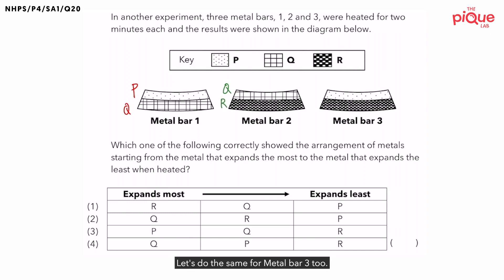Let's do the same for metal bar three too. This is metal P, and this is metal R.